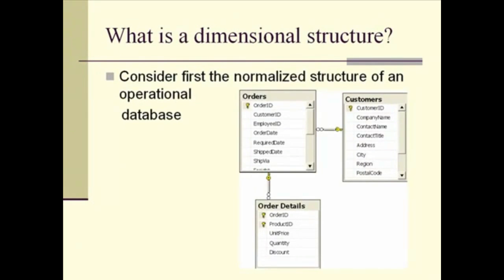So what is a dimensional structure? First, let's consider the normalized structure of a typical operational database. Here's a small example: we're interested in collecting orders for widgets. We design our tables as follows — we have an order table to collect the master information for the order, the information that pertains to the order as a whole. Then we have the order detail table containing information for each item, each widget purchased, including the quantity and unit price. We make sure not to duplicate customer information or order date on each detail line.